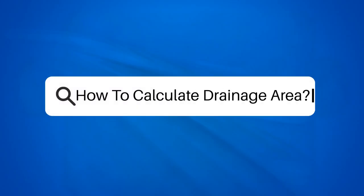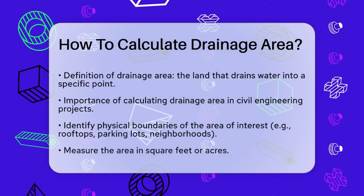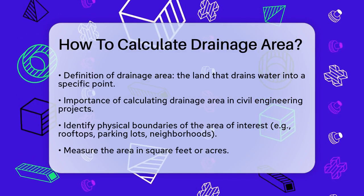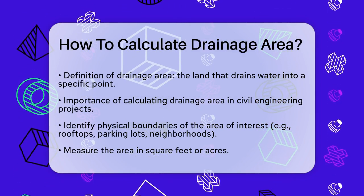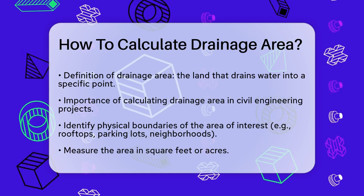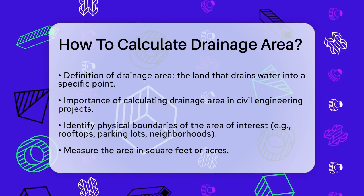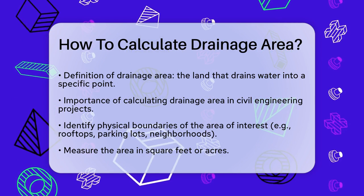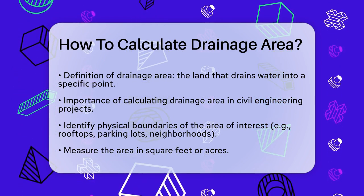How to Calculate Drainage Area. If you're working on a civil engineering project and need to figure out how to calculate the drainage area, you're in the right place. Let's break it down step by step. First, you need to understand what the drainage area is — it's the land area that drains water into a specific point, like a storm sewer or a stream. To calculate this, you'll need a few key pieces of information.